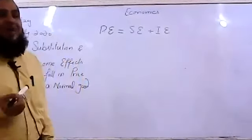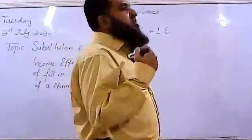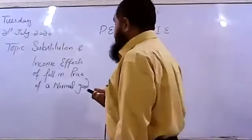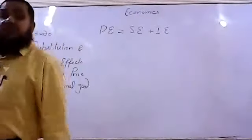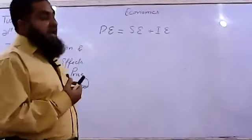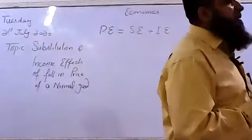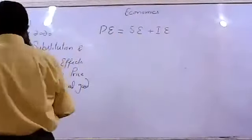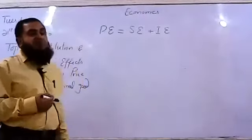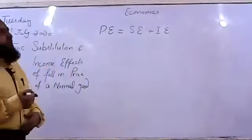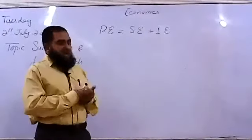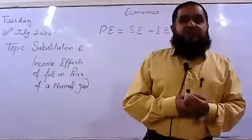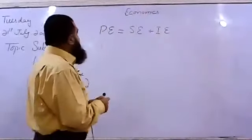When the real income of the consumer increases and he buys more of that commodity, that is called the income effect, and that good is called a normal good. In other words, the substitution effect of a normal good is positive and its income effect is also positive when its price goes down. When both the substitution and income effects are positive, we say this good is a normal good. Now I will explain it diagrammatically.